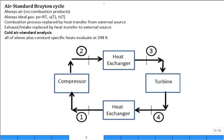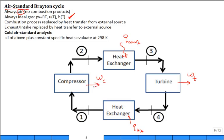We perform what we call an air standard analysis, just as we did for the air standard Otto and diesel cycles — an air standard Brayton cycle analysis. There's always air, no fuel or combustion; it behaves as an ideal gas. Combustion is replaced by heat transfer Q-in at the combustor, and the intake and exhaust are replaced by a heat rejection heat exchanger. Work transfer comes out of the turbine W_T, and work W_C goes into the compressor — the compressor consumes work, so W_C is negative.